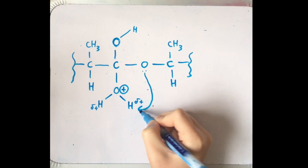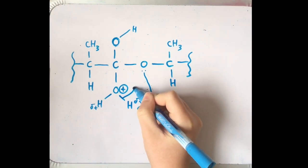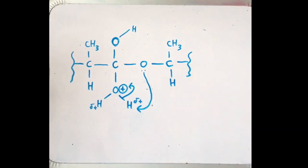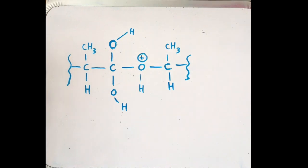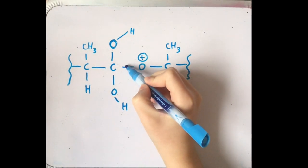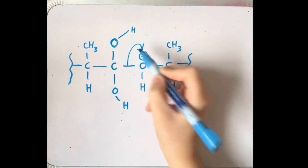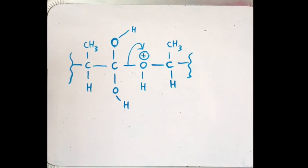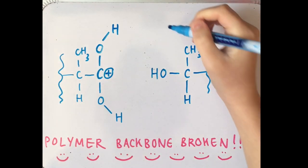The bonding electron pair from the OH bond is donated to the positive oxygen, neutralizing its charge. The carbon-oxygen bond breaks and the lone pair is given to the oxygen to neutralize the positive charge. Finally, the polymer backbone has been broken.